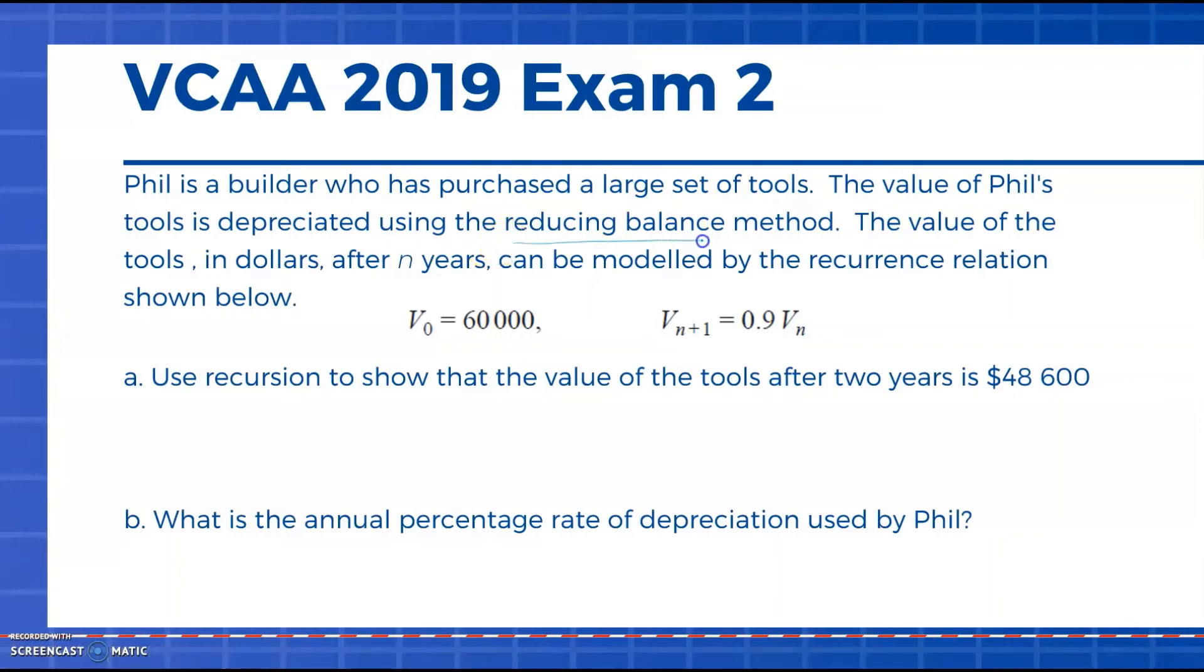An example from 2019: Phil is a builder who purchased a large set of tools and his tools are depreciating using the reducing balance method. The value of the tools after n years is modeled by the rule here. We're told the initial value is sixty thousand dollars and we're given our recurrence relation there. When it says use the recurrence relation to show, this is a style where we have to actually show all of our working. We start by stating that initial value V₀ = 60,000. V₁ = 0.9 × V₀ = 0.9 × 60,000 = 54,000. V₂ = 0.9 × V₁ = 0.9 × 54,000 = 48,600, as required by the question.